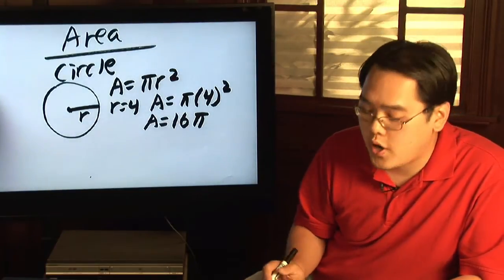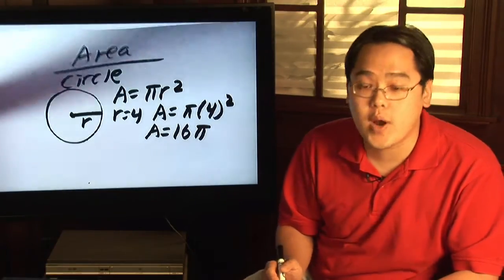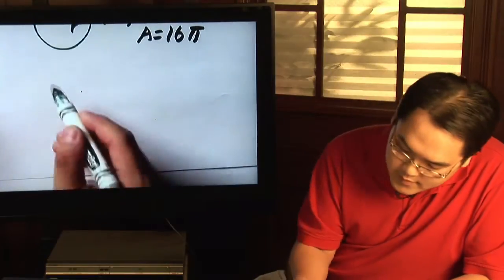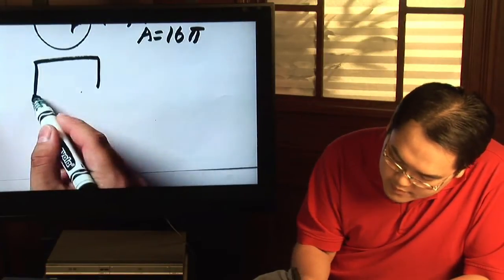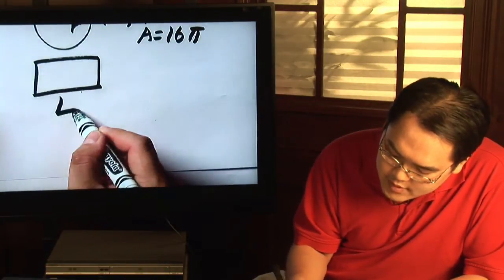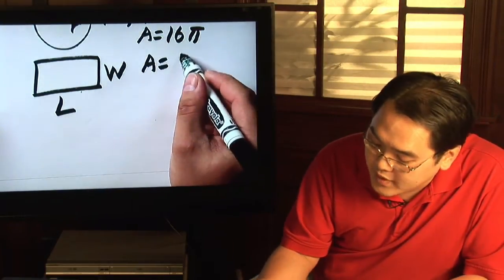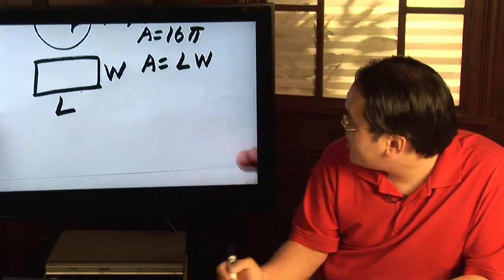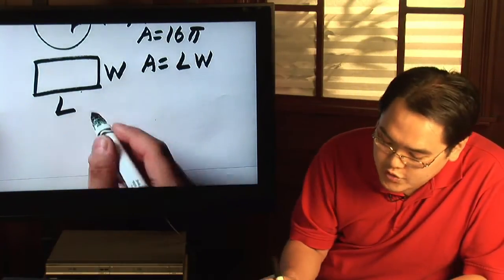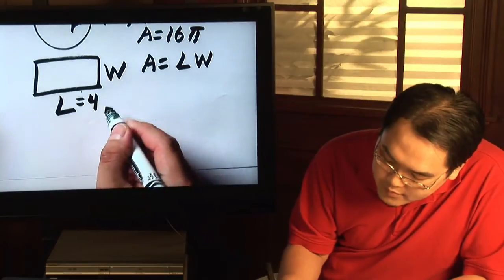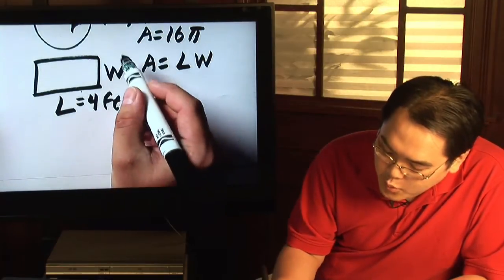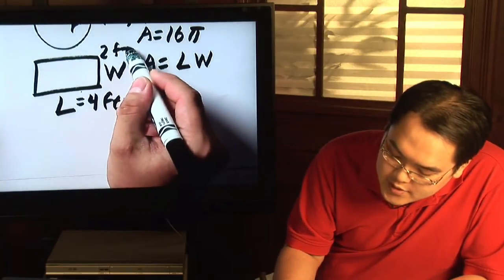Now, another common shape that we all tend to know is that of a rectangle. A rectangle has a length and a width, and so the area would be length times width. Now, let's just say for example that you knew the length to be four feet, and the width let's just say two feet.